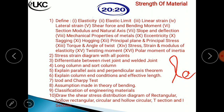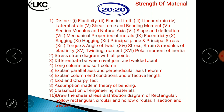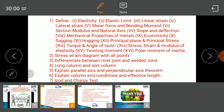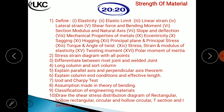Effective length is represented by le. There are four end conditions: first, both sides fixed; second, both hinged; third, one side fixed and one side hinged; fourth, one side fixed and the other side free. These four types of end conditions are provided for effective length calculations.